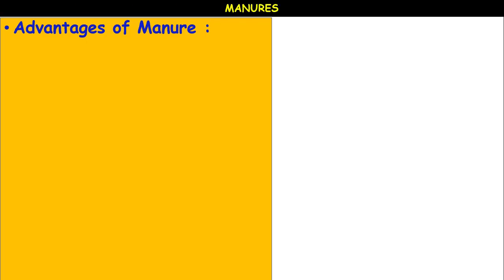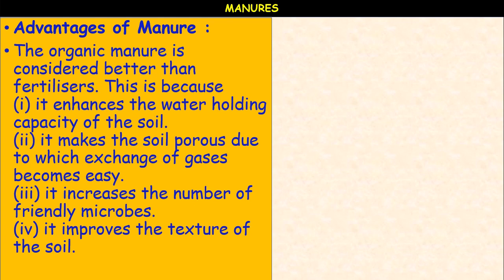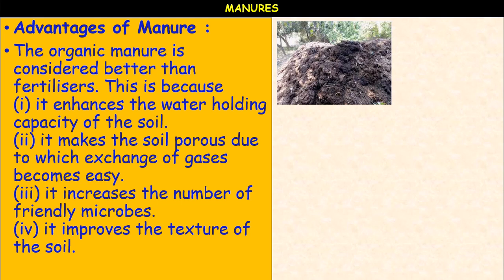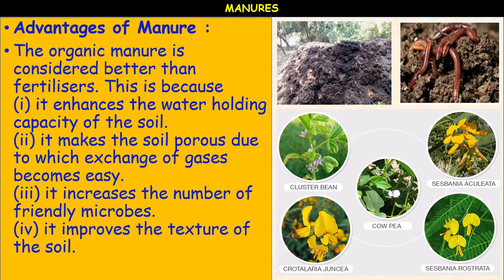Advantages of manure: Organic manure is considered better than fertilizers because it enhances the water-holding capacity of the soil, makes the soil porous so that gas exchange becomes easy, increases the number of friendly microbes such as earthworms, bacteria, and fungi, and improves the texture of the soil. Types of organic manure include cow dung manure, vermicompost, and green manure such as cluster bean, crotalaria, cowpea, sesbania aquilata, and sesbania rostrata.